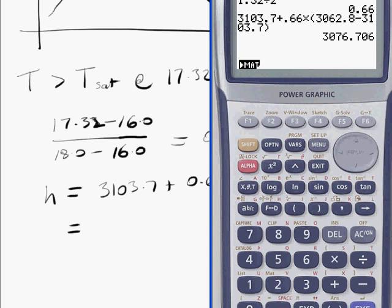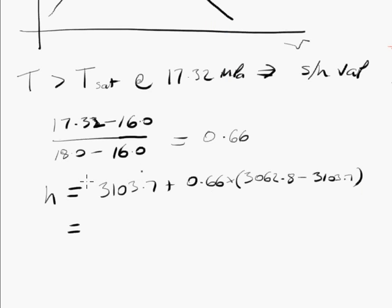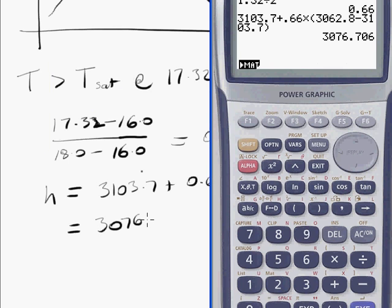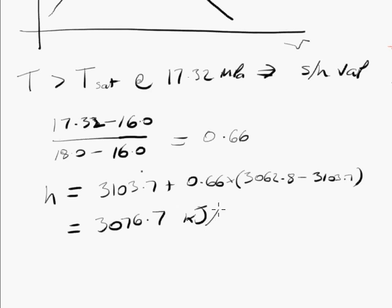That looks about right. 3076.7 kilojoules per kilogram. And that is our answer.